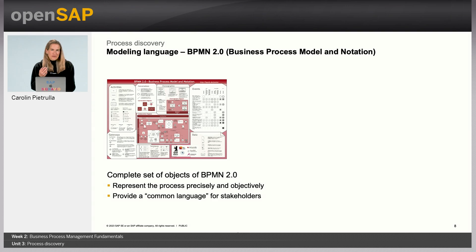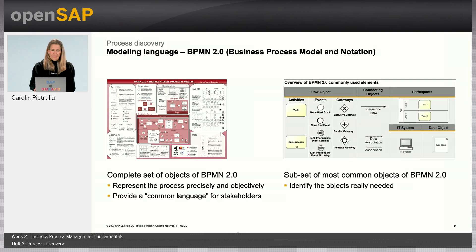Process modeling creates a basis by representing the process holistically in a precise and consistent manner. It provides a common language for all different stakeholders — such as business analysts, technical developers, and business people — so that they finally know what the others are talking about. The full set of BPMN 2.0 consists of 64 elements, and I would rather not recommend using all of them. I would highly recommend reducing the objects to only the really necessary ones, defined in modeling conventions or on a simple cheat sheet.